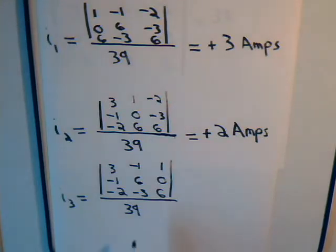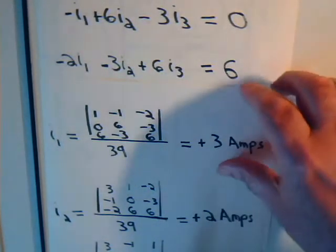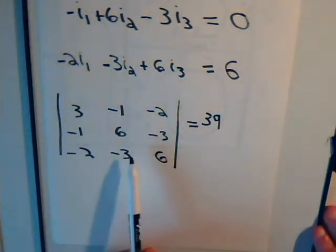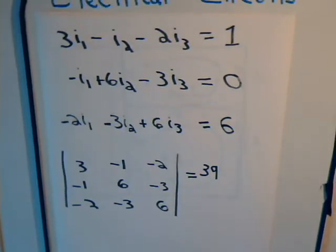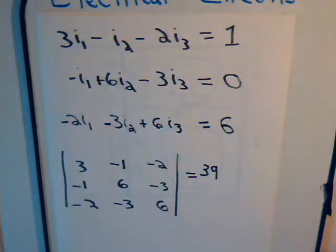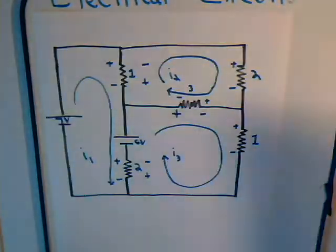In each case, we're dividing by 39. And again, 39 was the numerical value of this determinant, which we obtained from this 3 by 3 matrix here. Let's go ahead and see if we can determine what current I3 is.